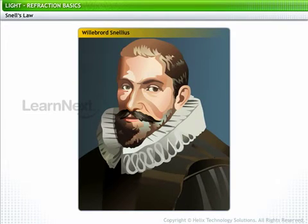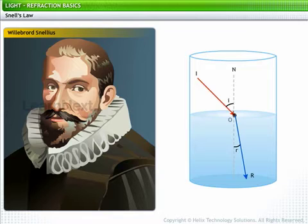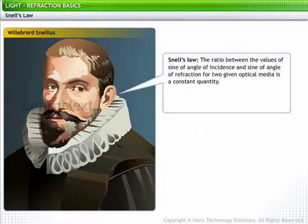Willebrord Snellius, a Dutch mathematician, discovered the relationship between the angle of incidence and the angle of refraction for two given optical media. On the basis of this knowledge, he proposed a law to measure the refractive index of a material. This law is known as Snell's Law.